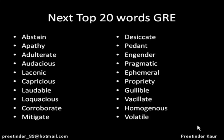Let's revise these 20 words: Abstain — staying away from something. Apathy — indifference. Adulterate — to contaminate. Audacious — bold. Laconic — very to the point. Capricious — dependent on whims and fancies. Laudable — appreciable. Loquacious — very talkative. Corroborate — to support something. Mitigate — reduce danger or seriousness. Desiccate — reducing the life or spirit of something. Pedant — giving attention to formal rules. Engender — bringing forth something. Pragmatic — practical. Ephemeral — short-lived. Propriety — proper behavior. Gullible — who believes anyone and everyone. Vacillate — oscillate between two opinions. Homogeneous — of the same nature. Volatile — evaporates or vanishes quickly.